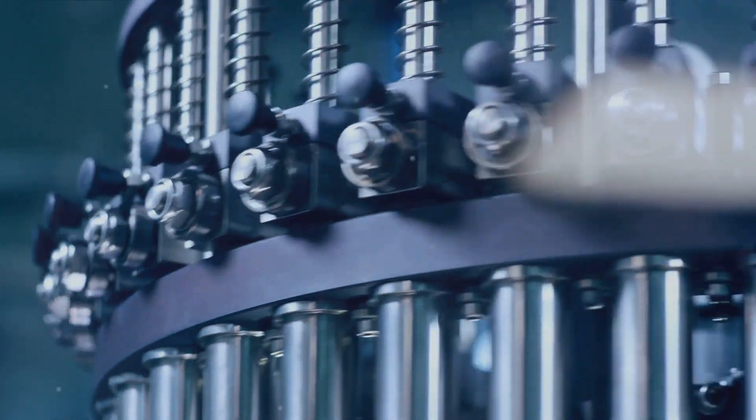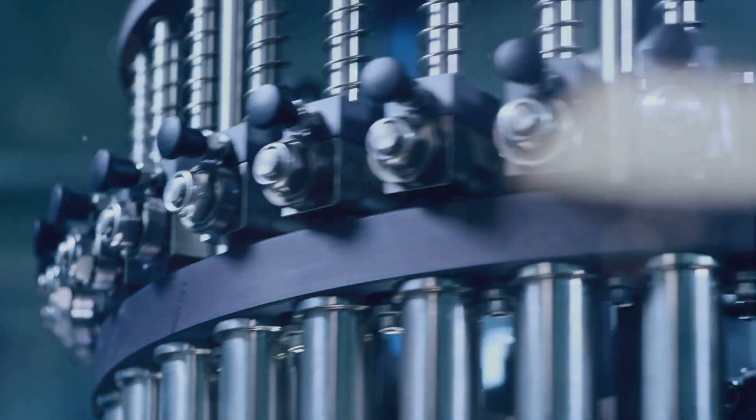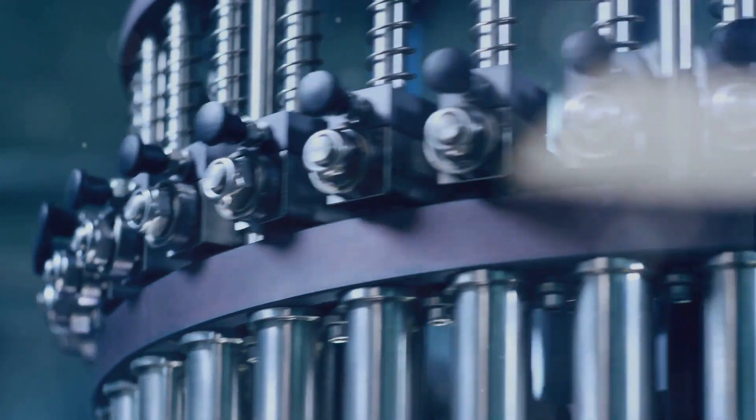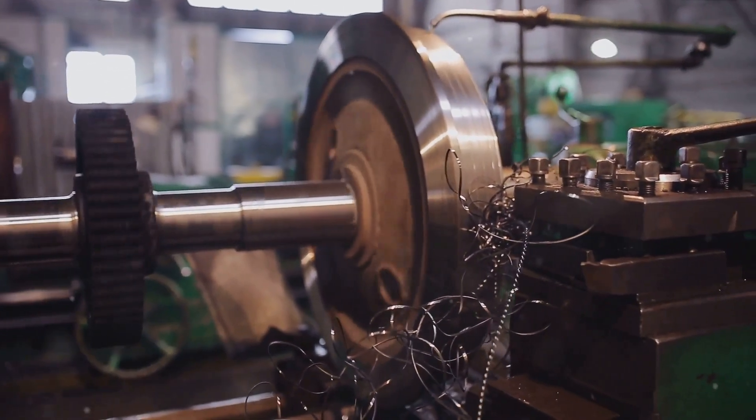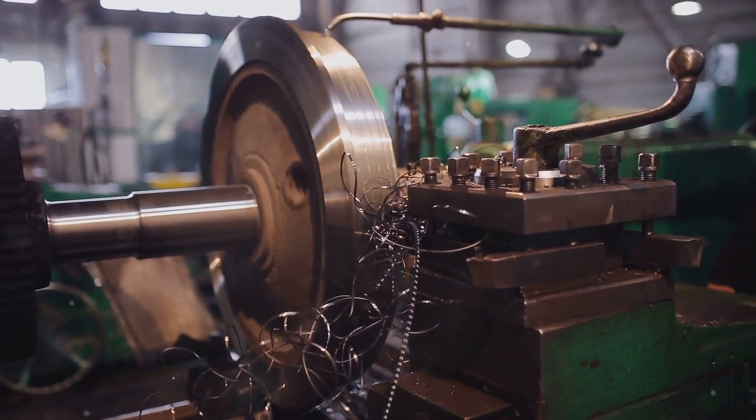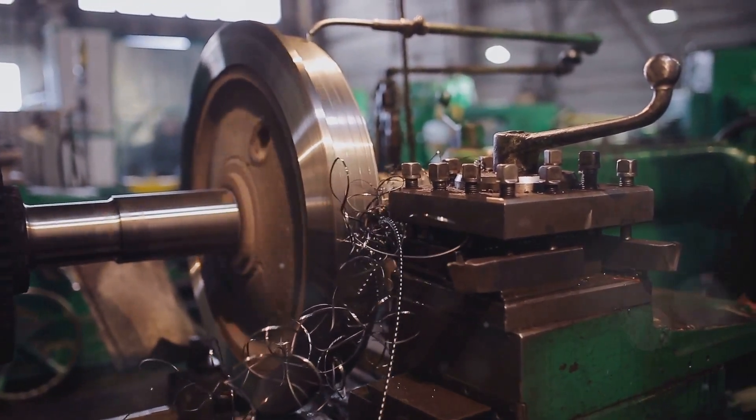First off, we have the power press machine. This stalwart of the machinery plant is responsible for applying pressure to manipulate the shape and size of various materials. It's a powerhouse, exerting force with precision and control to create the exact component needed.